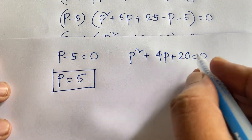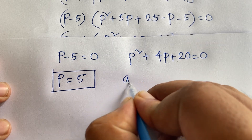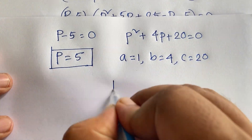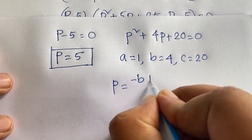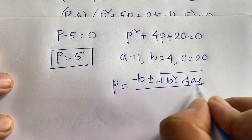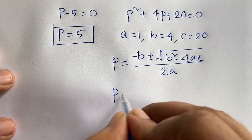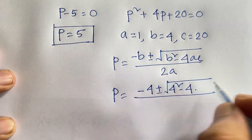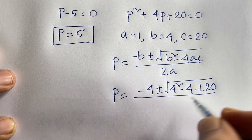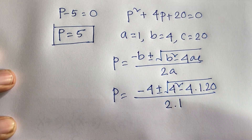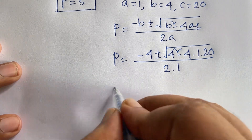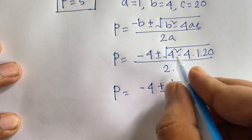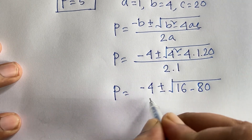And in the second case, it is a quadratic equation. Comparing, A equals 1, B equals 4, and C equals 20. So P equals negative B plus or minus square root of B squared minus 4AC, over 2A. That gives P equals negative 4, plus or minus square root of 4 squared, which is 16, minus 4 times 20, which is 80, over 2.